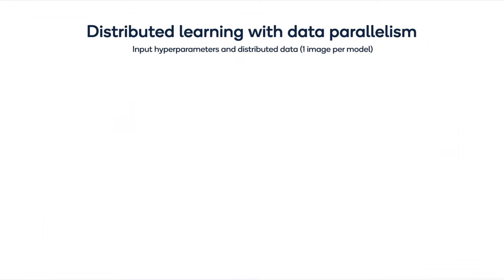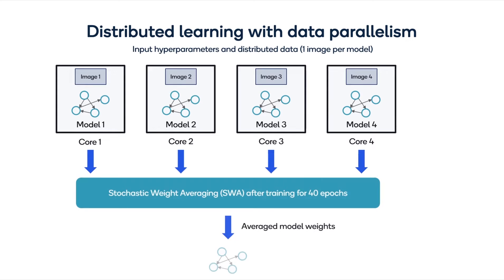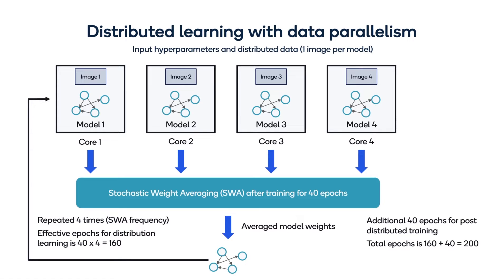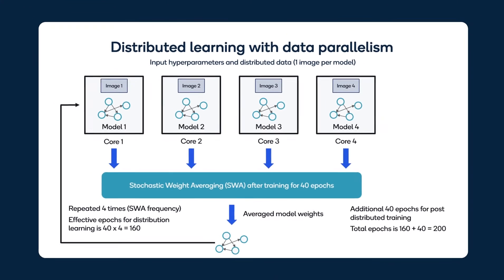Reducing the time for on-device fine-tuning improves the user experience. Hence, we use distributed training to parallelize the fine-tuning procedure. We distribute the images and training iterations into each CPU core with the same hyperparameters. After the training procedure is completed, the multiple models are aggregated. Using this method, we have reduced the training time by half.